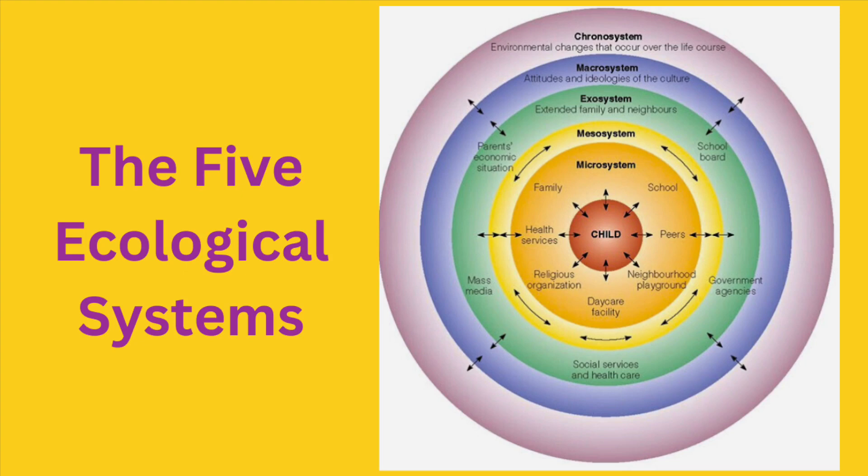The next system is the macrosystem. This setting is the actual culture of an individual. The cultural context involves the socioeconomic status of the person and his family, his ethnicity, race, and whether he is living in a developing or a developed country. For example, being born into a poor family makes a person work harder every day.